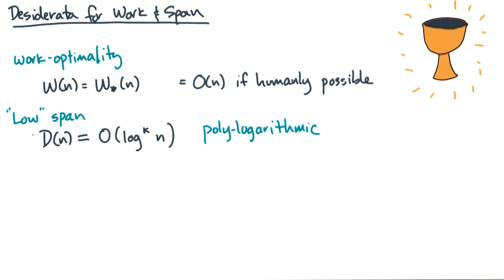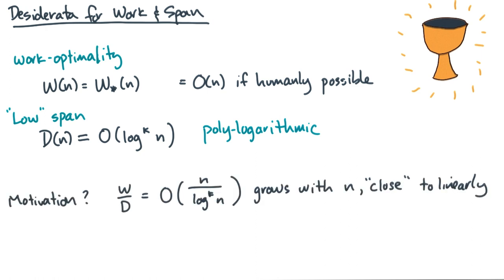then polylogarithmic span ensures that the average available parallelism grows with n. Now, you'll always have to use your judgment about whether a given parallel algorithm has good work and span. But please use these ideals as a guide.